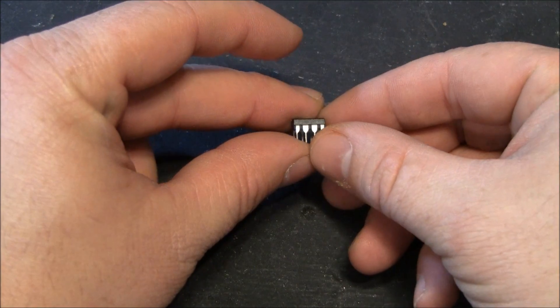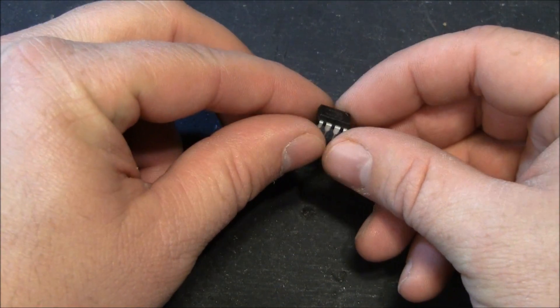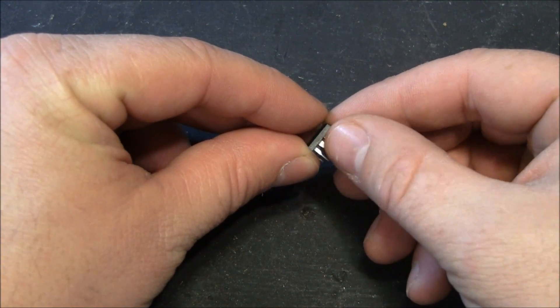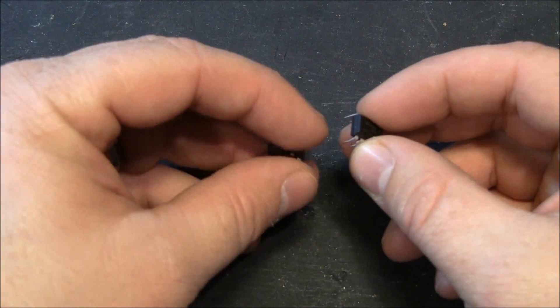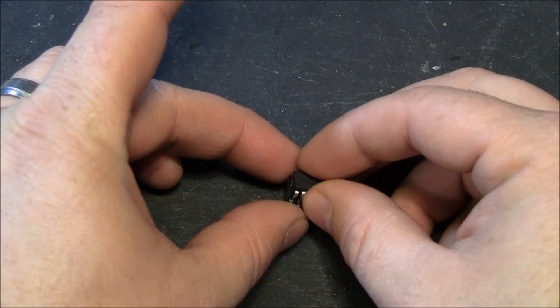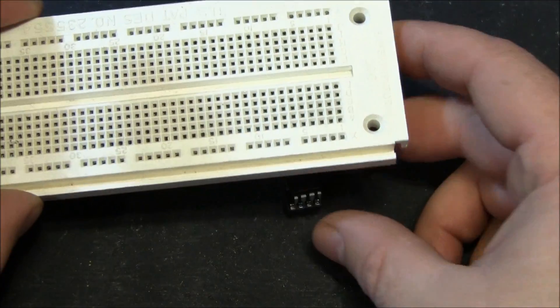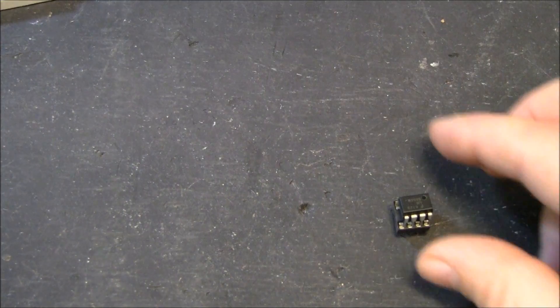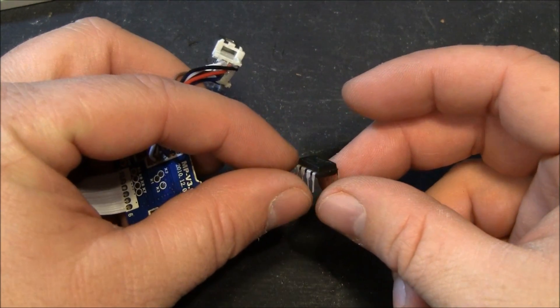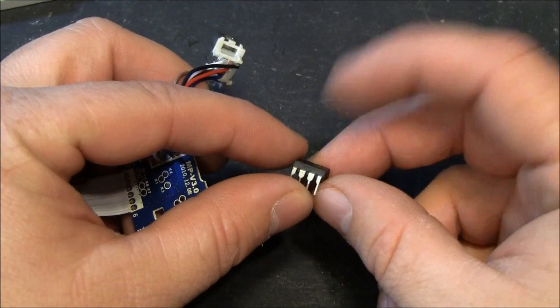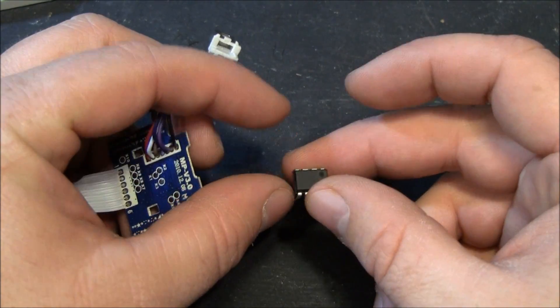This chip is in a DIP package, meaning it has these little pins where you can easily take it and stick it in a socket or in a breadboard. When ordering parts, it's a lot easier to experiment with the DIP pin type IC.